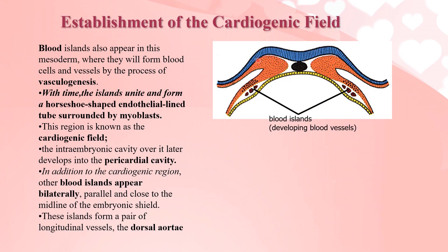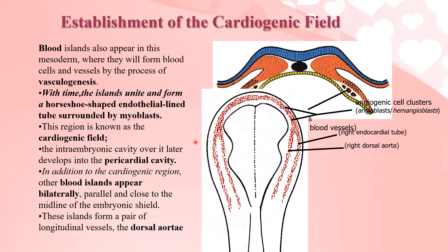Blood islands also appear in this mesoderm, where they form blood cells and vessels by the process of vasculogenesis. Over time, the islands unite and form a horseshoe-shaped endothelial-lined tube surrounded by myoblasts. This creates the right endocardial tube with the right dorsal aorta, and the left endocardial tube with the left dorsal aorta.